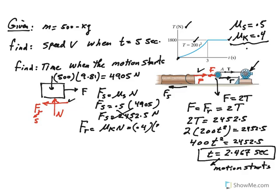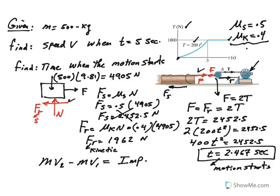If you go ahead and put 0.4 times 4905, mu_k times N, the kinetic friction becomes 1962 newtons. This is the kinetic friction that we're going to use for our analysis. If you start with your impulse momentum equation, m*v2 minus m*v1 equals impulse. The motion happens in the x direction. Initial velocity is zero up to 2.467, and then the motion starts. Mass equals 500 kilograms, v2 would be the velocity we're looking for at t equals five seconds.